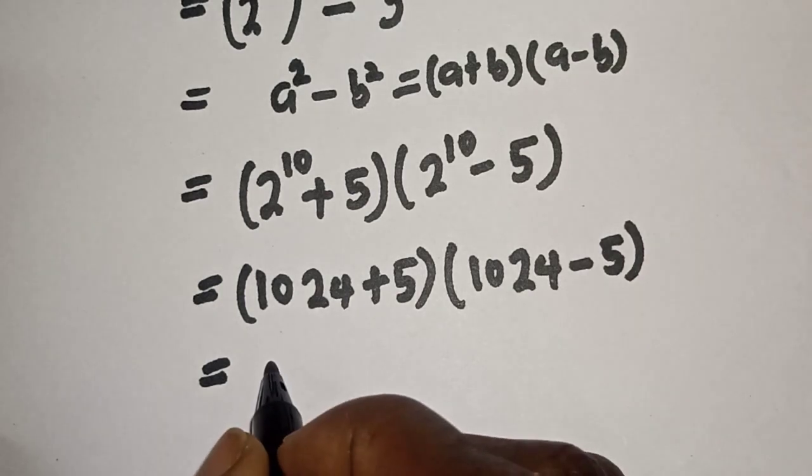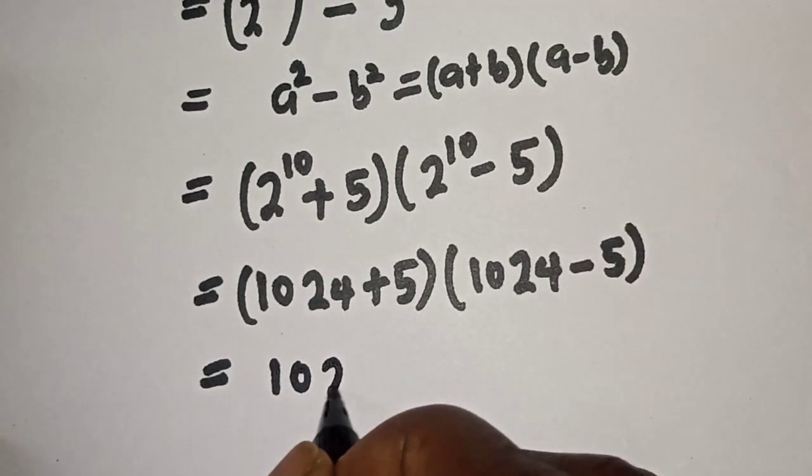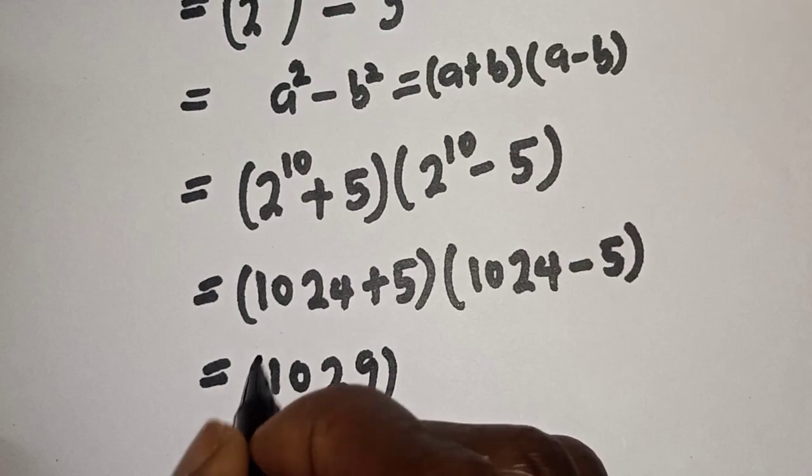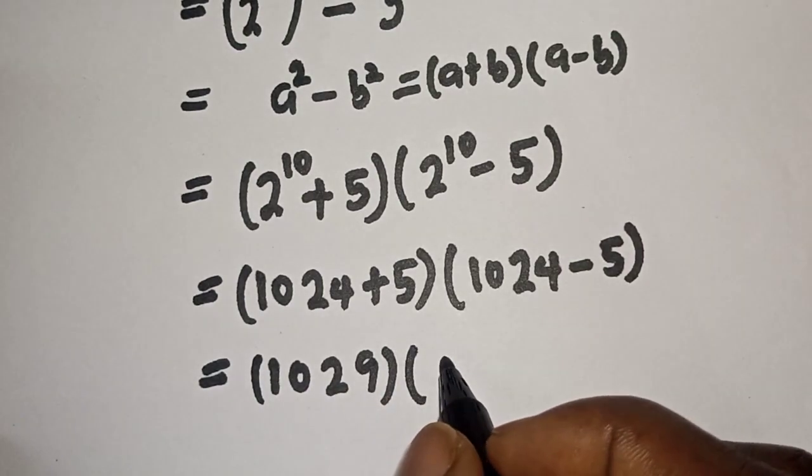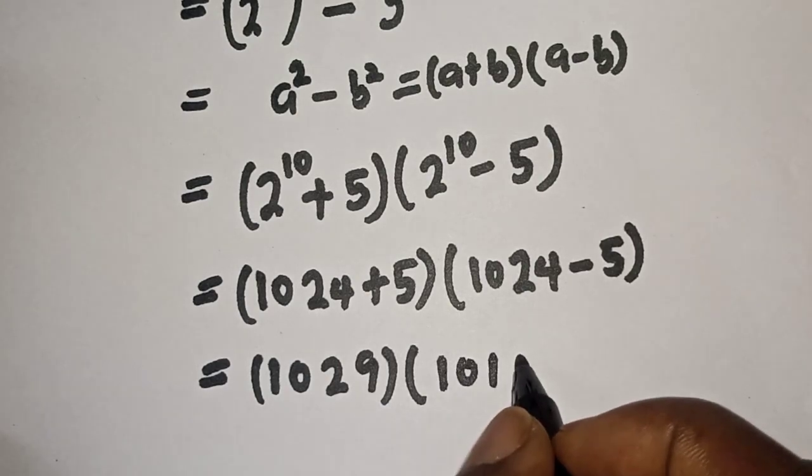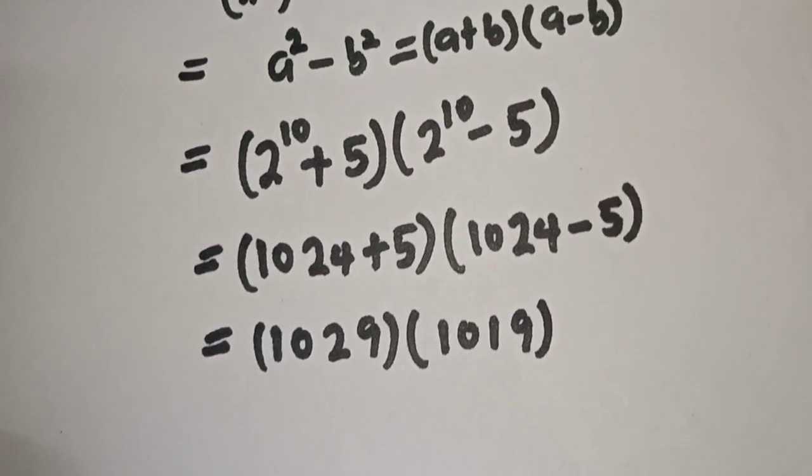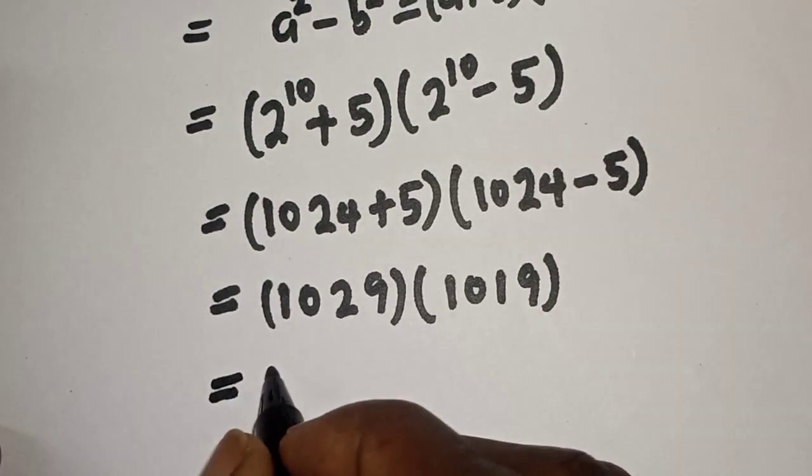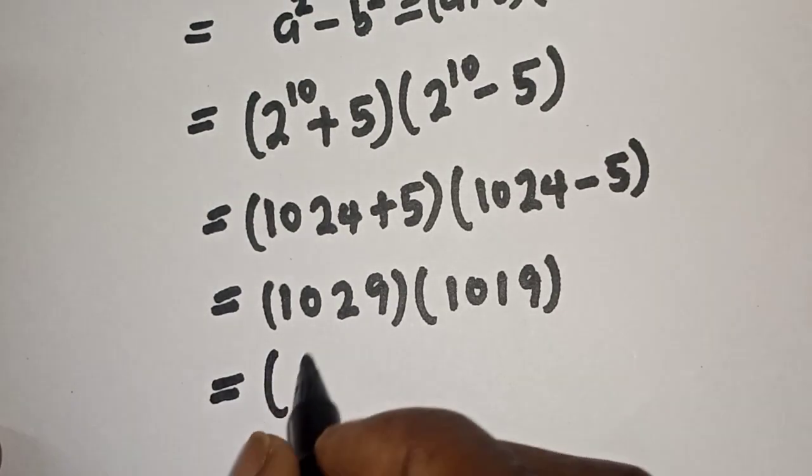This is equal to 1024 plus 5, 1029, bracket 1024 minus 5, this is 1019.